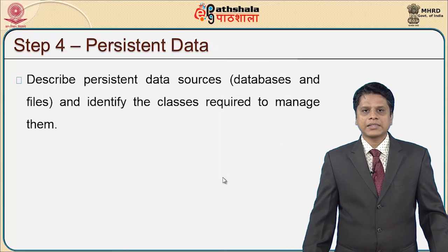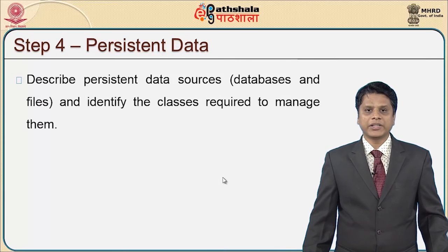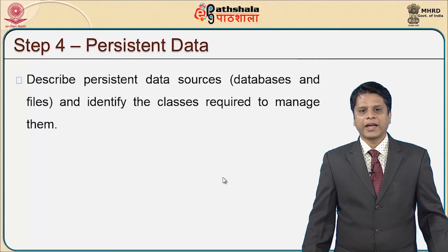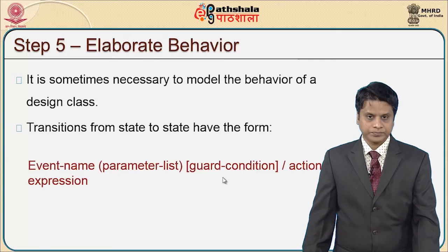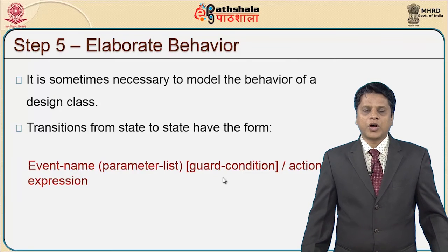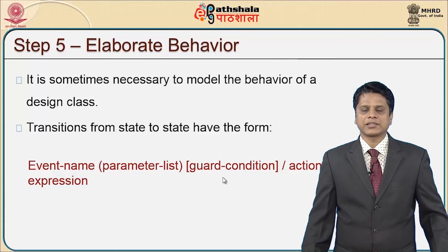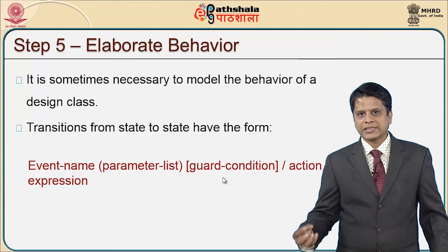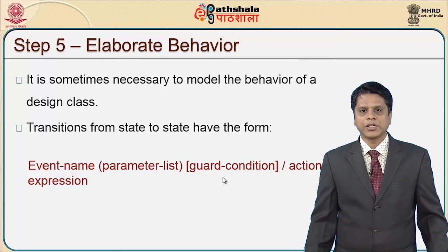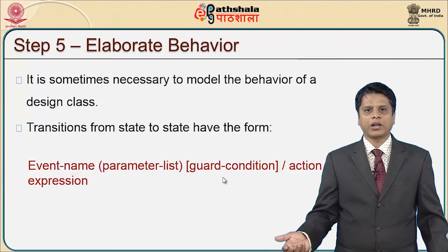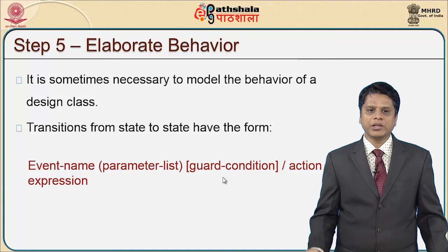Step 4 concentrates on the persistence of data — how long and how mature is the process to have data sources. This describes persistent data sources such as databases and files, and identifies the classes required to manage them. Elaborating the behavior of this component level design: it is sometimes necessary to model the behavior of the design classes. Transitions from one state to another can have negative or positive effects, so this behavioral change needs to be clearly understood.